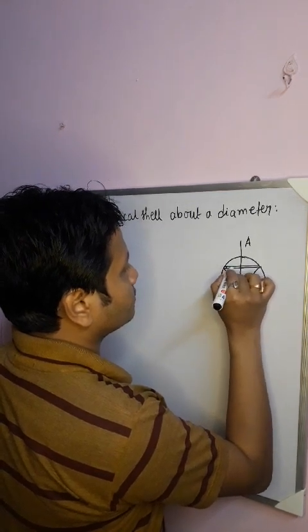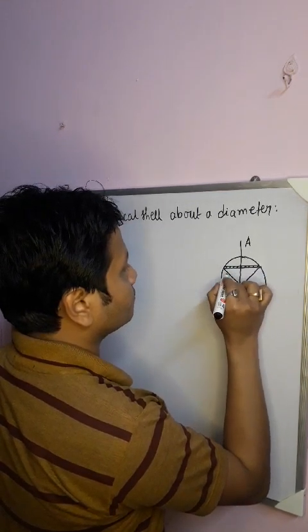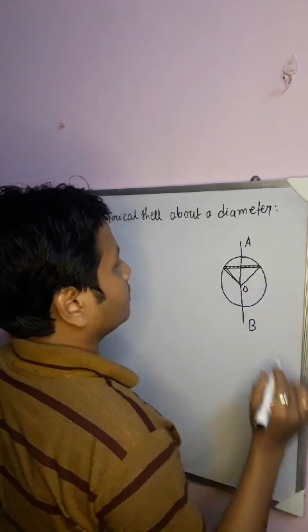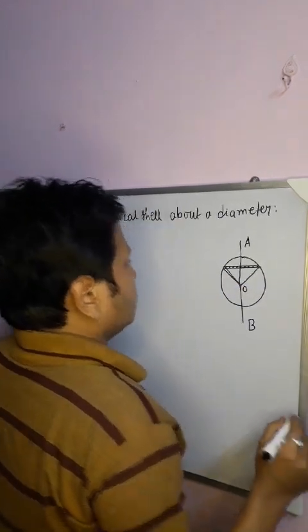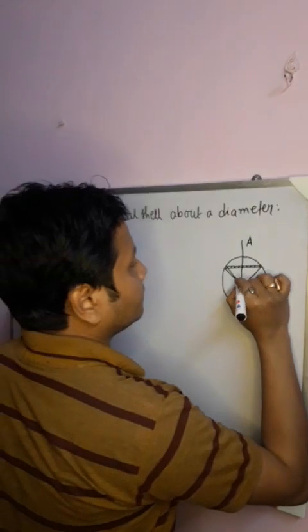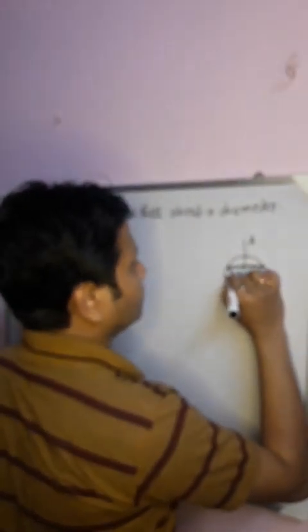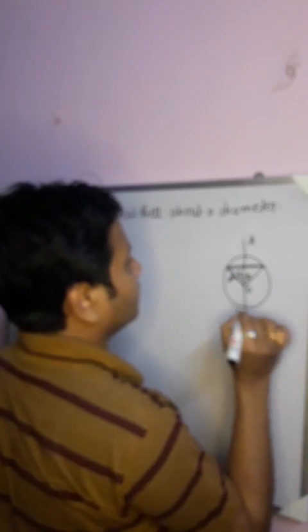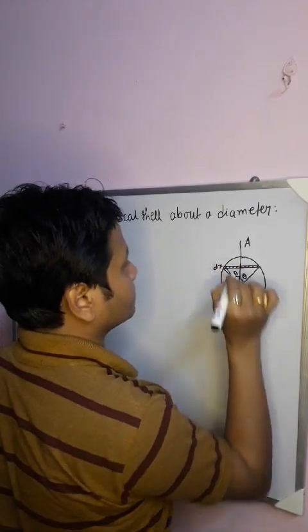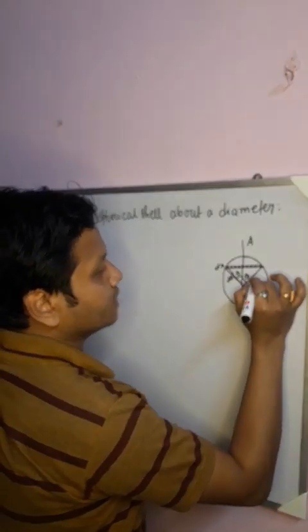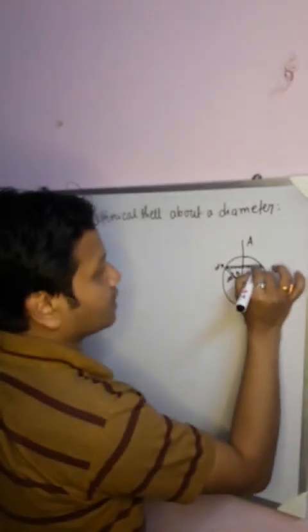This is a slice. If this angle is θ, this is also θ, this is a small angle dθ, and the width of the slice is dx. If the radius is R, then the radius of the slice is R sinθ.